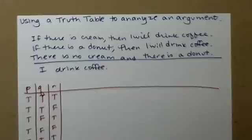Okay, so let's see how we use a truth table to analyze an argument to see if it's valid or invalid.